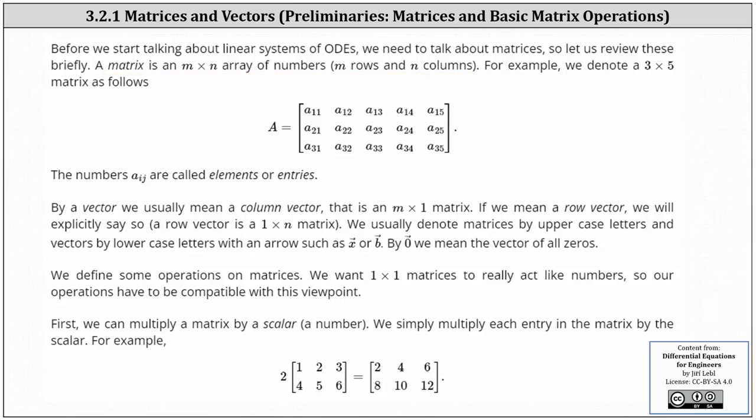For example, we denote a three by five matrix as follows. We often use a capital letter. Here we have matrix A, which is a three by five matrix.